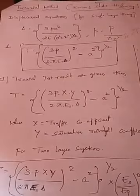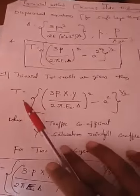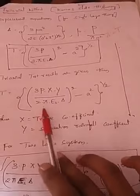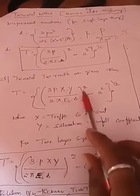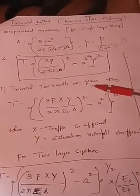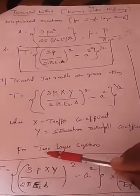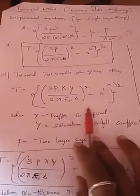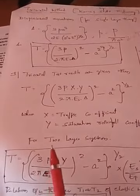Since the design method is based on triaxial tests on pavement subgrade soil, once test results are given the equation is modified as: T equals the square root of [(3PXY divided by 2·pi·E_s·delta)² minus a²], where T is thickness of the flexible pavement, X is the traffic coefficient and Y is the saturation rainfall coefficient obtained from the triaxial test.